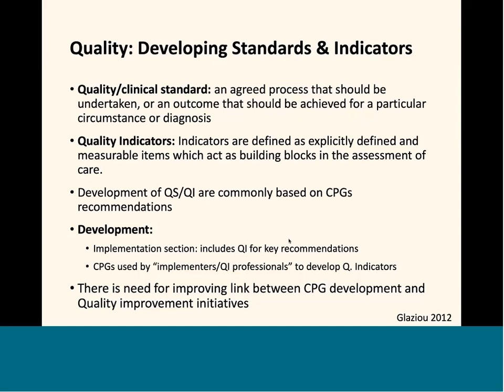The development of quality standards and indicators is commonly based on clinical practice guideline recommendations. There are two major approaches: guidelines could have an implementation section in which the guideline development group recommends quality indicators to measure and follow up on the process of implementation. This is a way of translating the guideline into quality improvement processes. On the other side, quality improvement professionals could select the guideline, extract key recommendations, and develop quality indicators considered to be of priority for a specific organization.